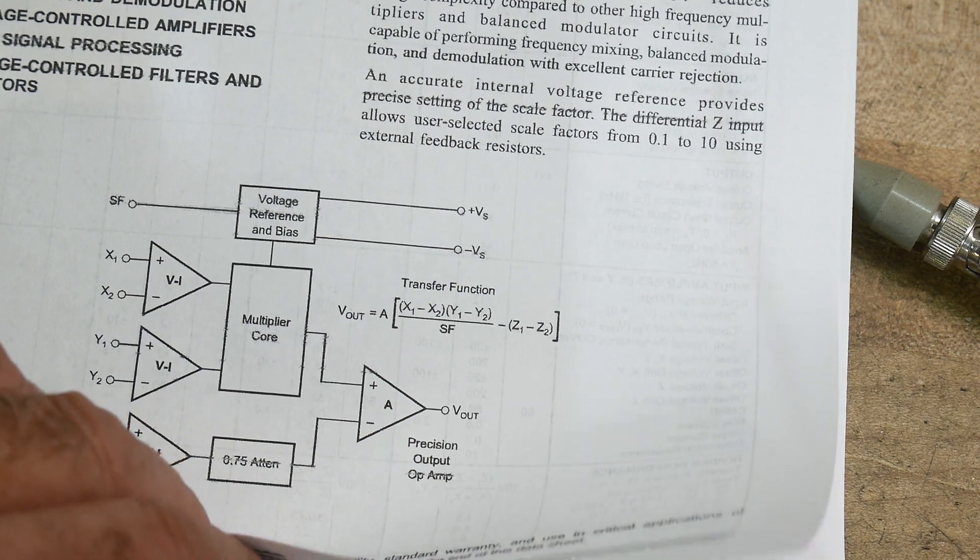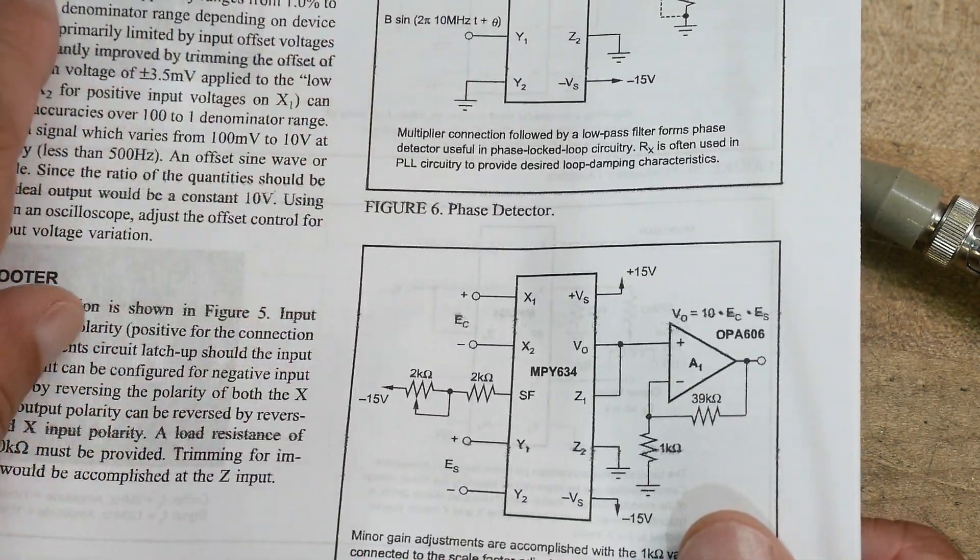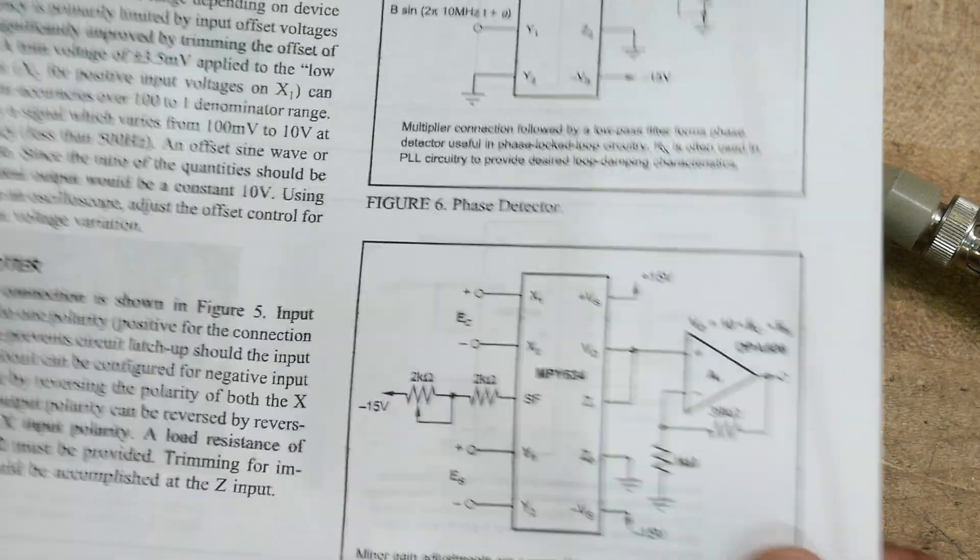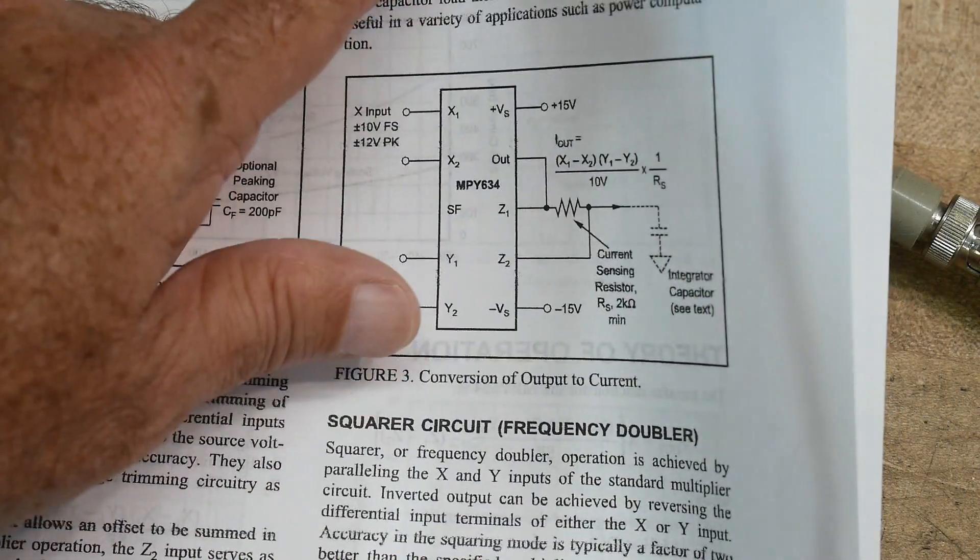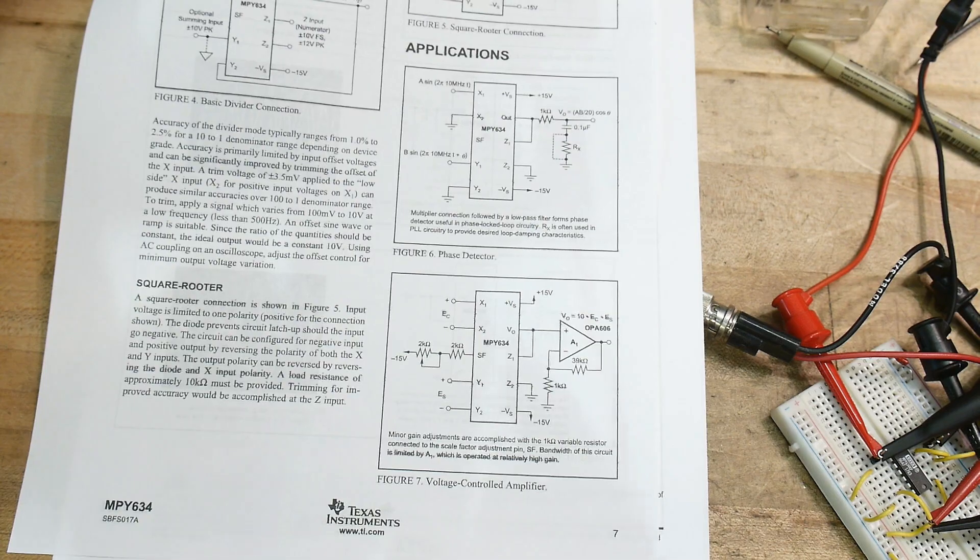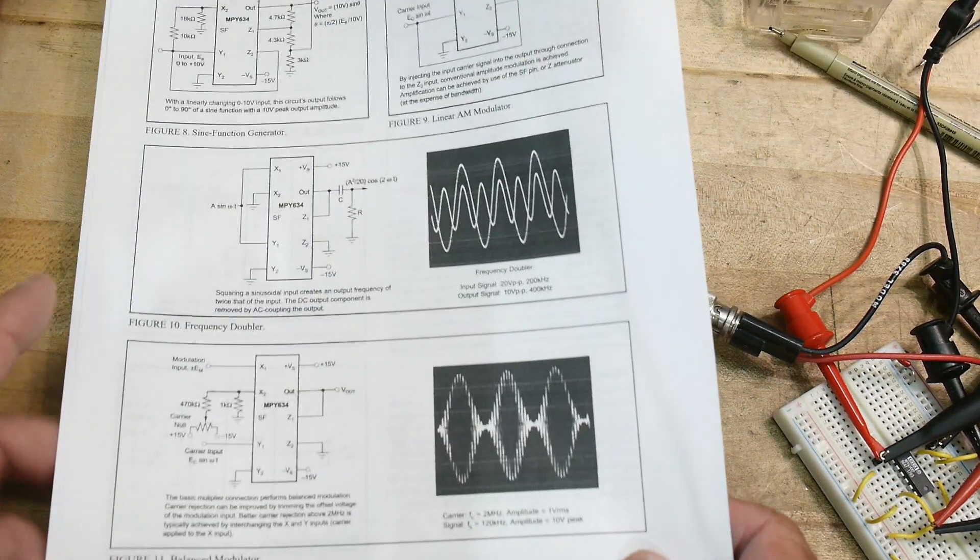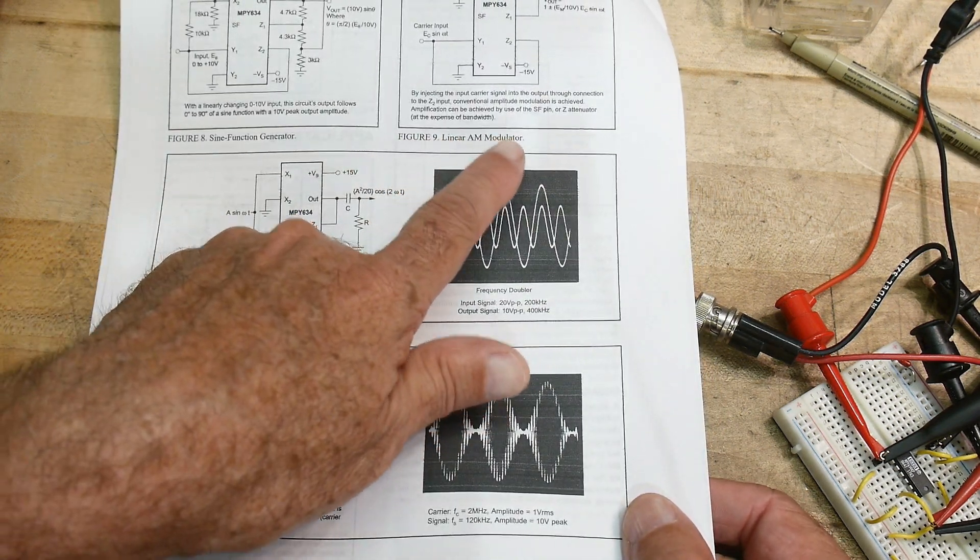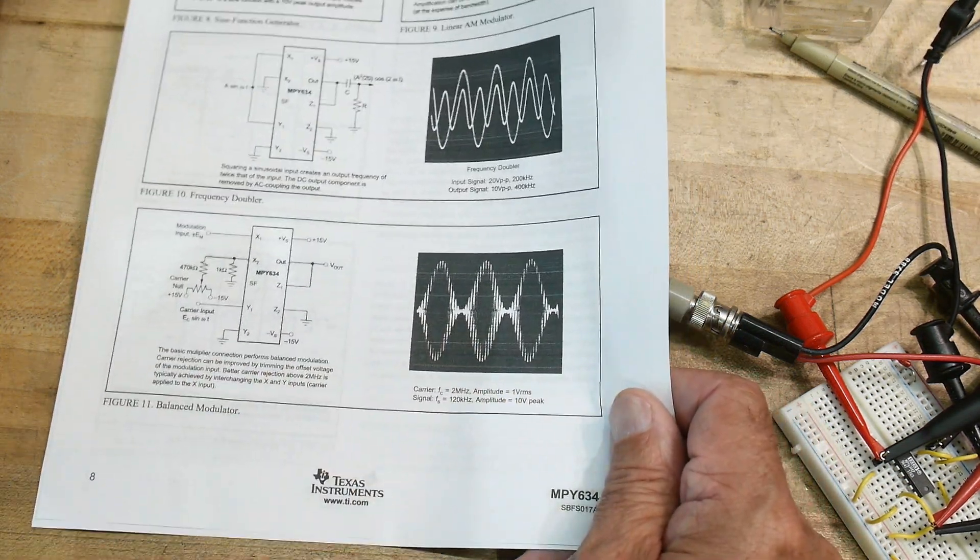I recommend you go look this thing up and look at the datasheet because the applications are interesting. You can do a square root. You can do divide. You can do phase. You can do voltage control amplifier. You can do scale factor, multiplication, conversion of output to current. Let's see here. You're not seeing any of that, are you? Benny doesn't remember. You need to read the data sheet. This is a really cool data sheet. Sine function generator, a linear AM modulator, a frequency doubler, a balance modulator.